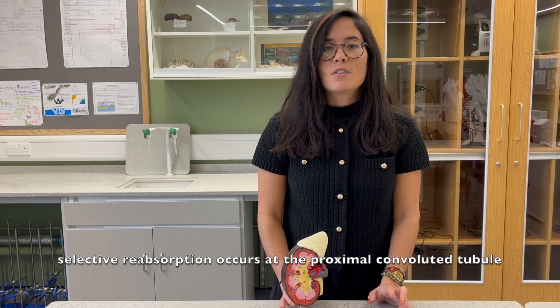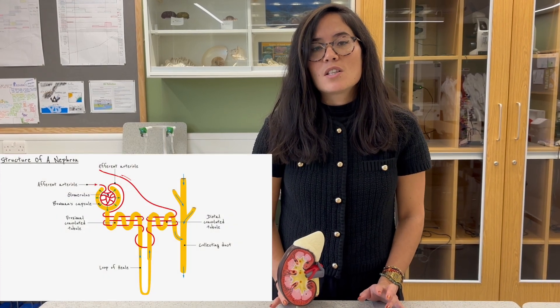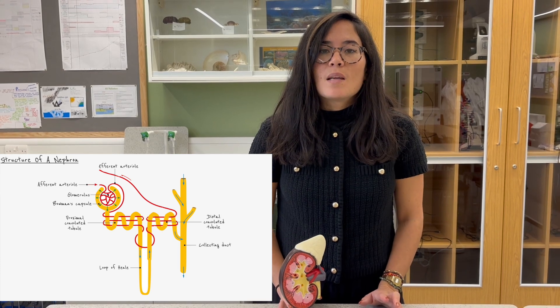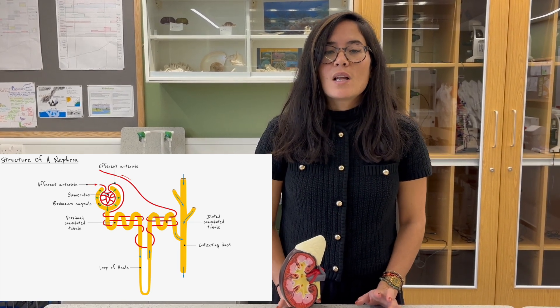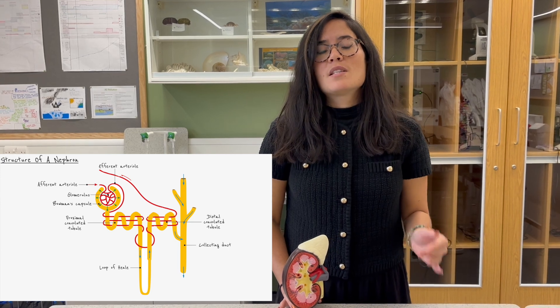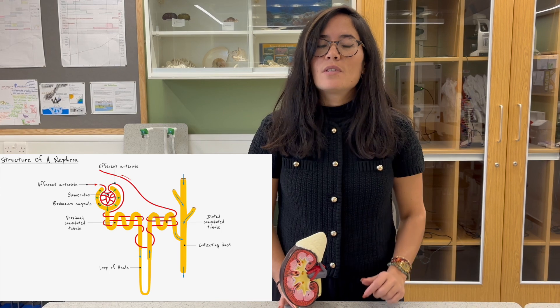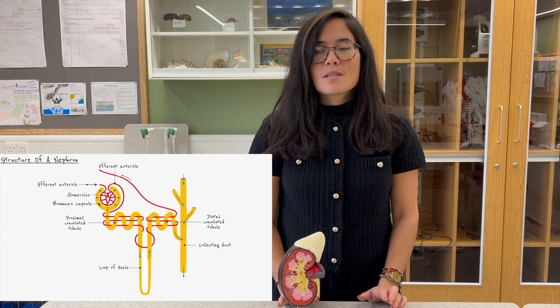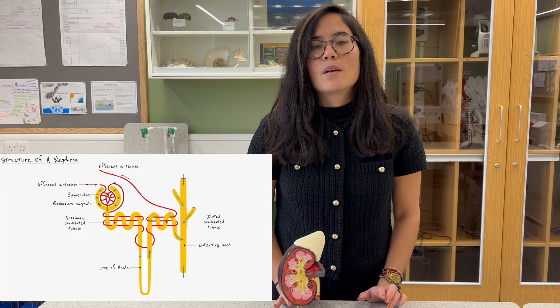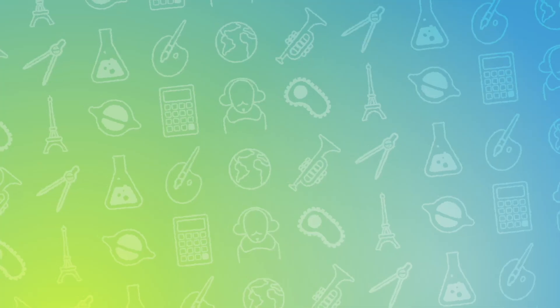The next step is selective reabsorption. This is when the useful molecules are removed out of the nephron and taken back into the blood. It occurs by a process of active transport — the movement of particles from an area of low concentration to high concentration, against the concentration gradient, therefore requiring an input of energy. Substances reabsorbed include glucose and ions. Urea, being a waste material, is allowed to continue along the nephron, and water is brought back into the blood through the action of ADH on the collecting duct. The urea passes along the nephron, down the ureter, into the bladder where it can be excreted — explaining why the kidney is described as an excretory organ.